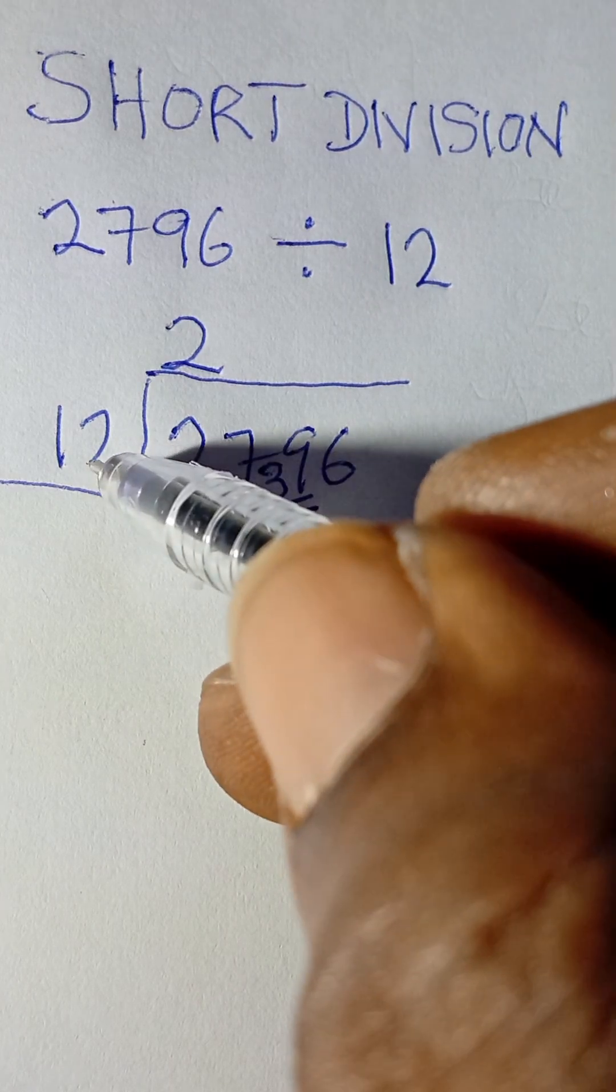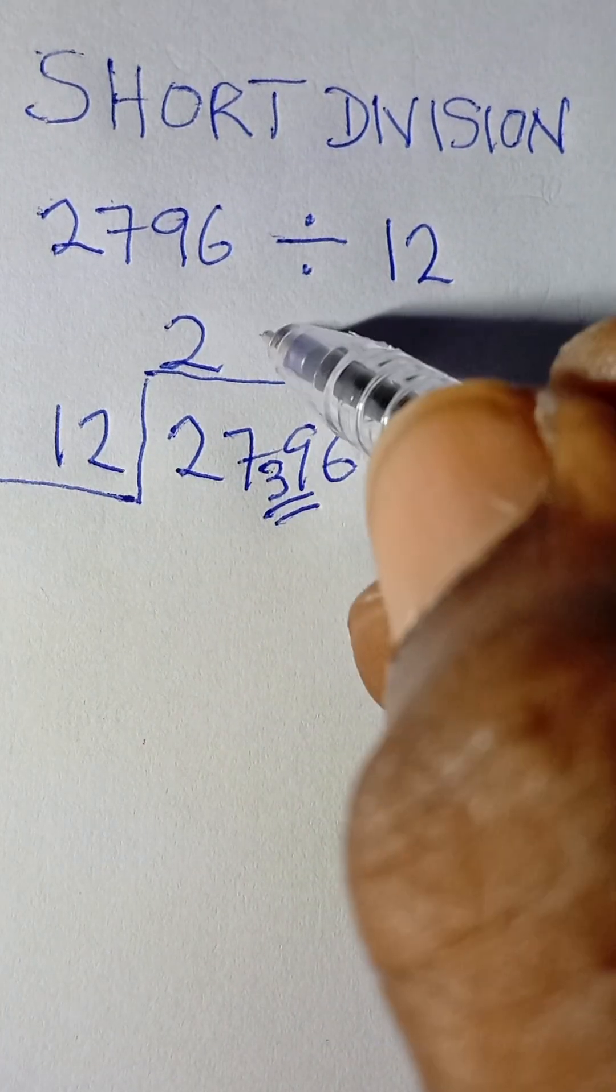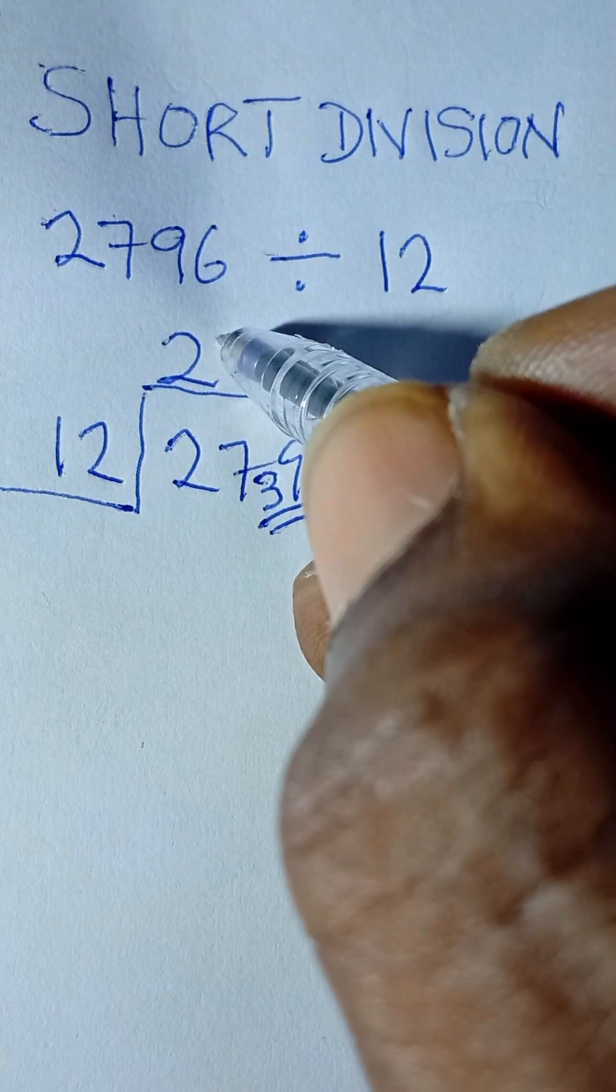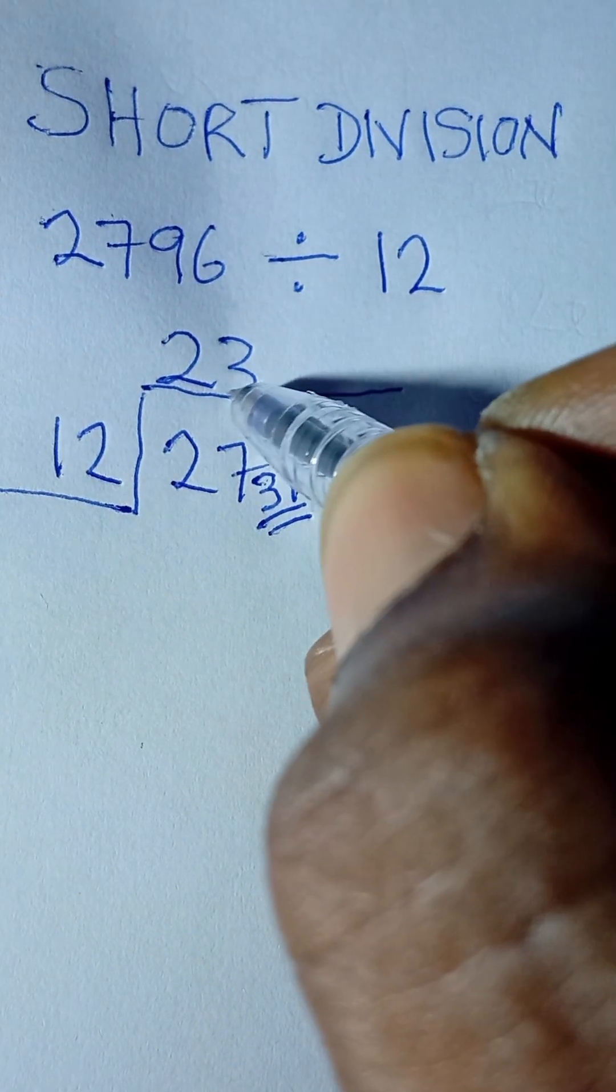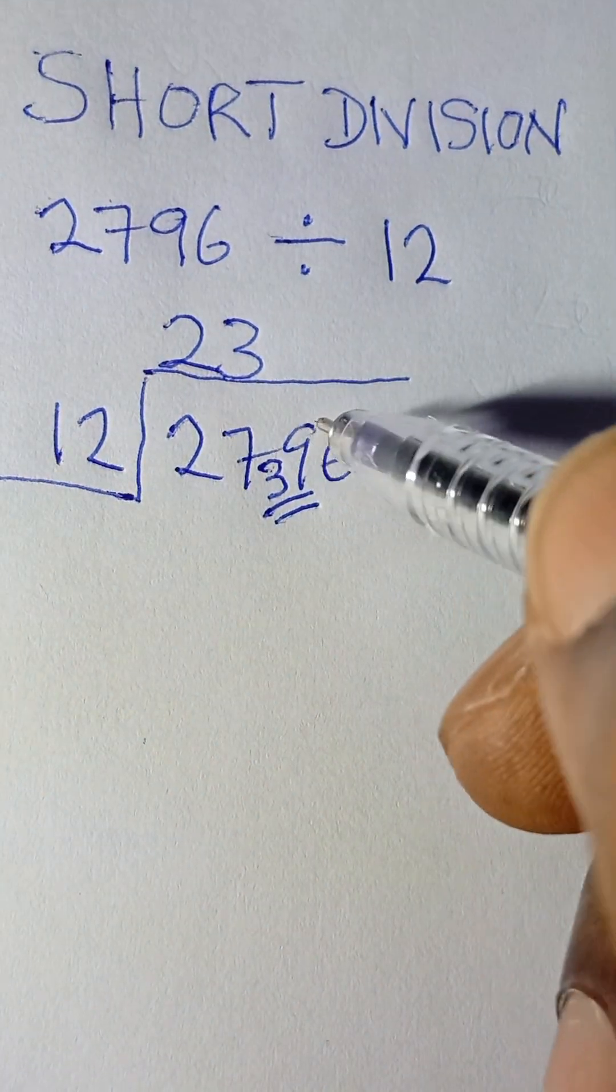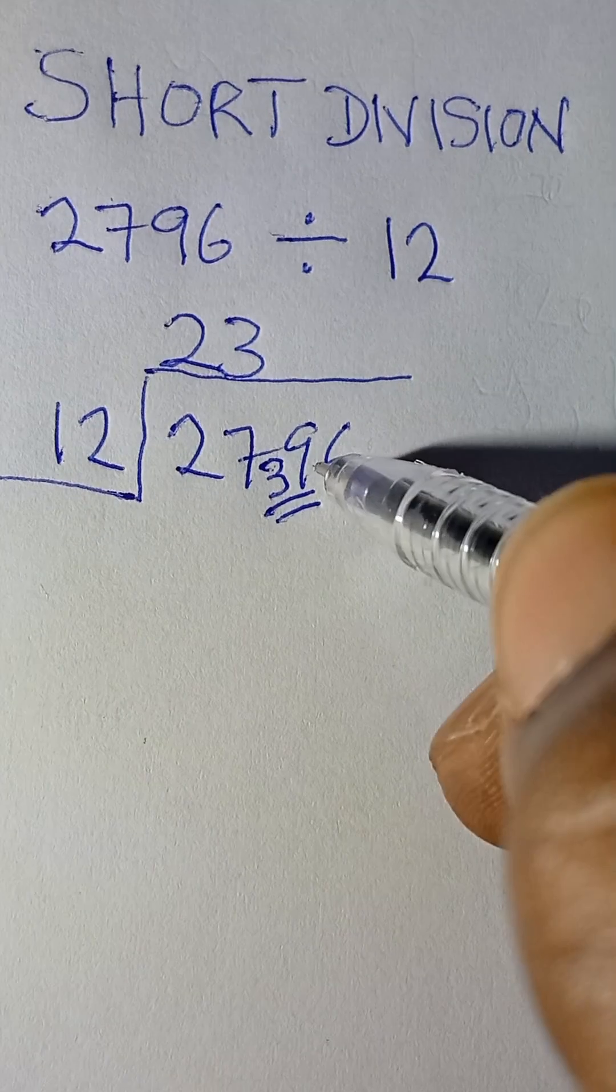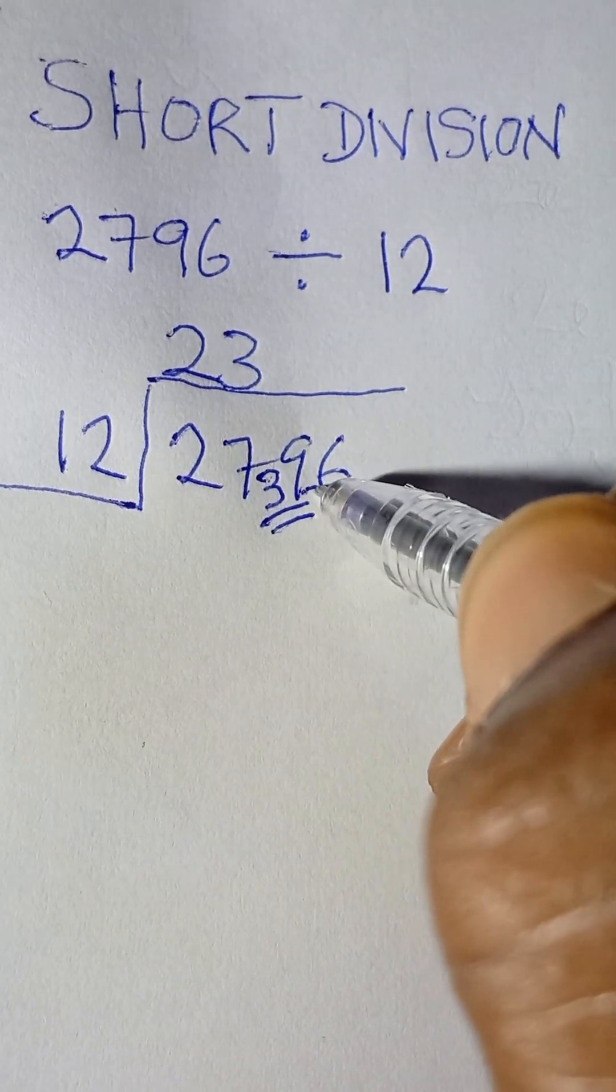So the next thing to do now is to say 39 divided by 12. 39 divided by 12 will give us 3 times. We'll put it at the top of the bar, 3 times remainder 3 as well. So that 3 that is also remaining, we'll put it here to make this number 36.